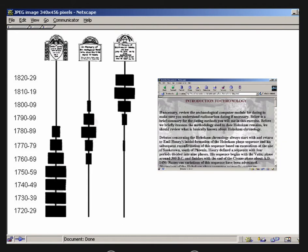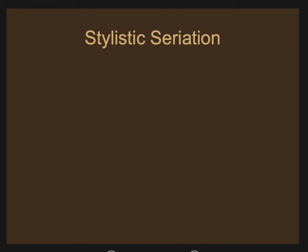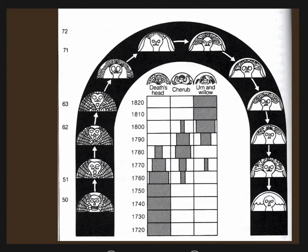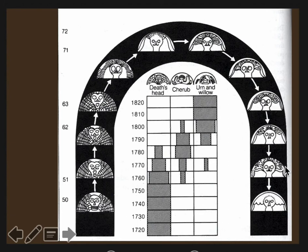Related to this is another kind of seriation called stylistic seriation. With stylistic seriation, you're trying to look at the materials and the styles themselves and see how they change over time. In the Marblehead cemetery, you might have noticed that some of the gravestones looked transitional between the death's head and the cherub — there seemed to be a slow, almost metamorphosis over time.